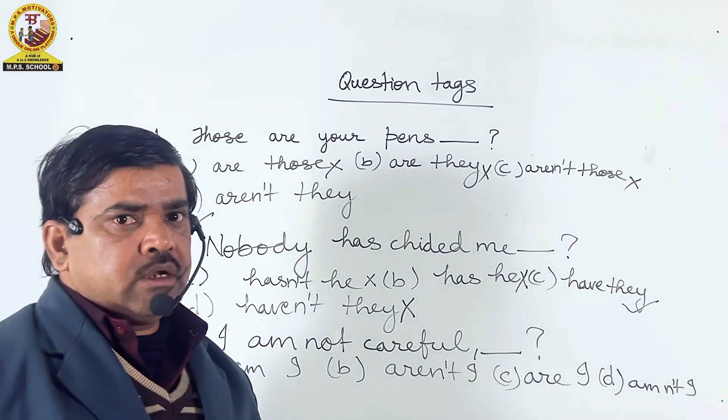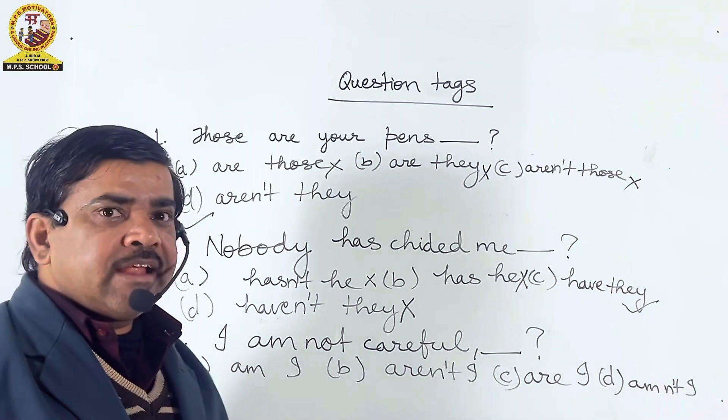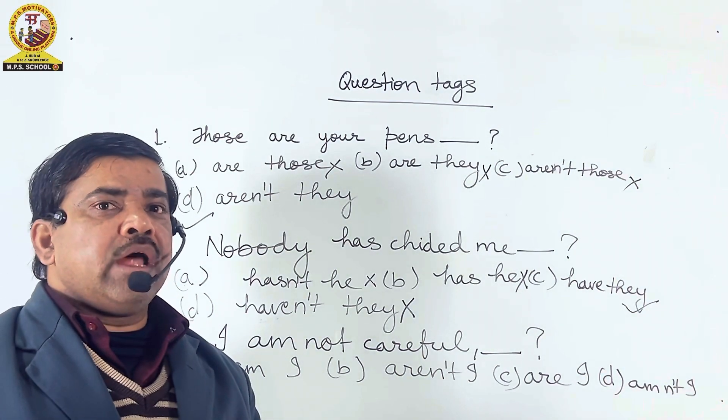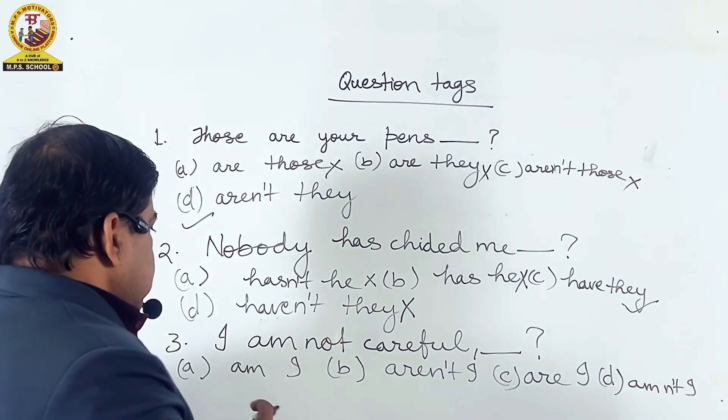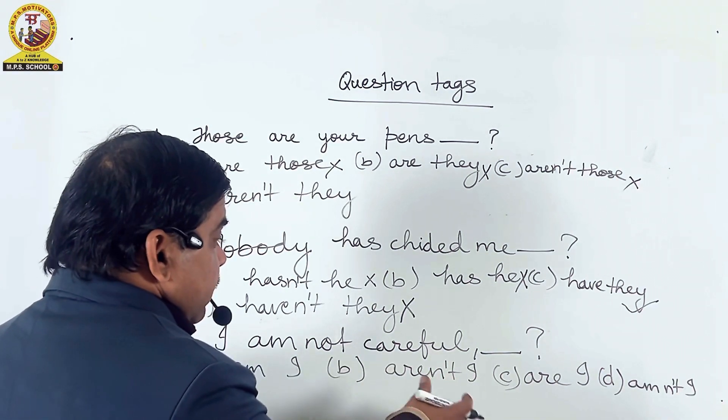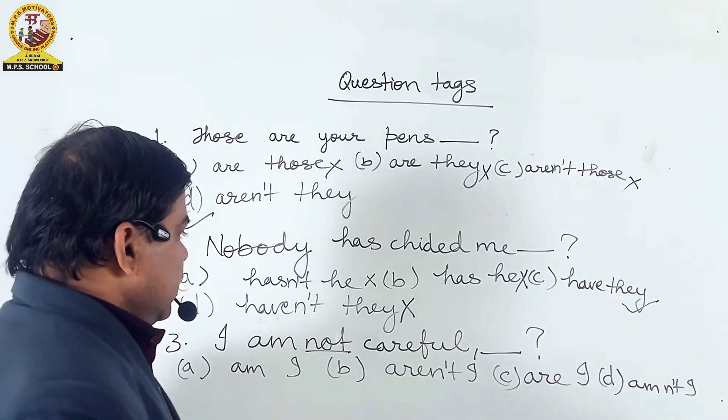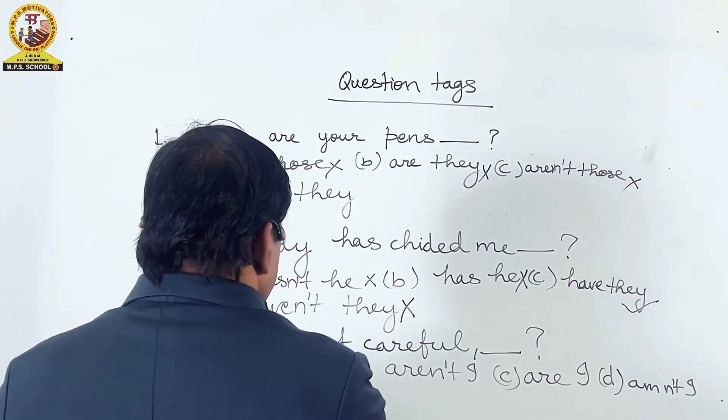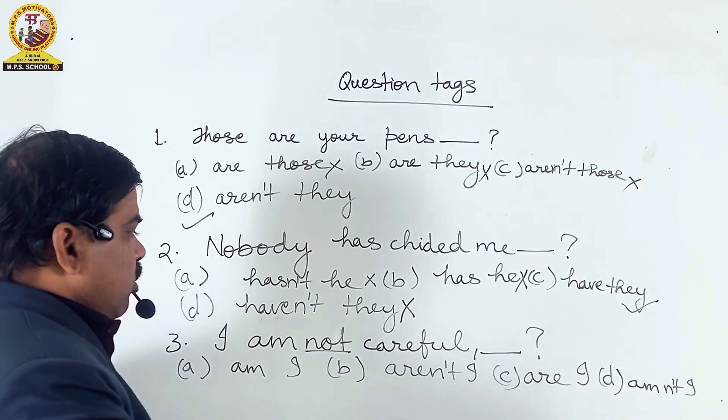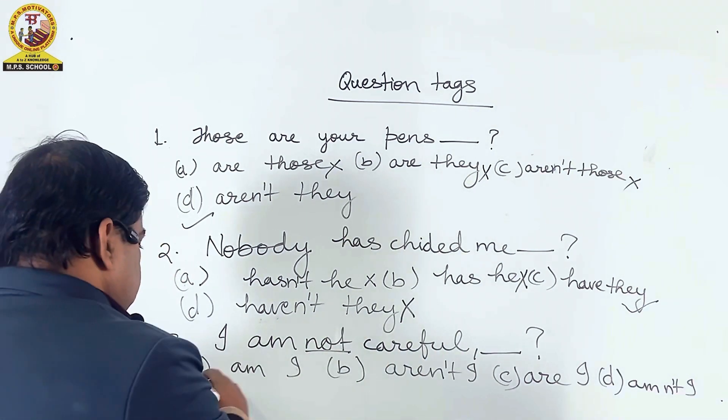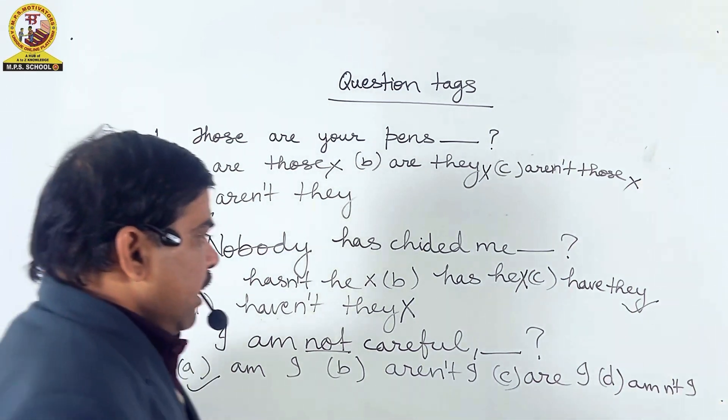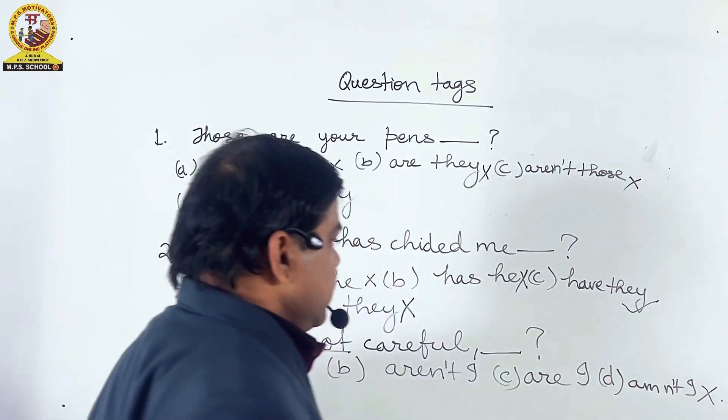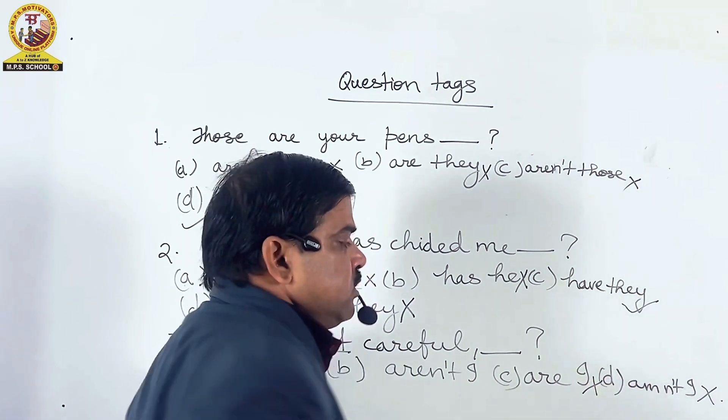Friends, our third question is: I am not careful, comma dash question mark. I am not careful means main saabdhan nahi hun. Here, aren't I is not the right option. Why? Because here, not is used in the sentence, so the statement is already negative. And here, are I and here am I. Friends, am I is the right option because the statement is negative. So the right option is option A, am I. This type of collection is not used as a question tag, so it is also the wrong option. Are I is also never used, so it is also the wrong option.